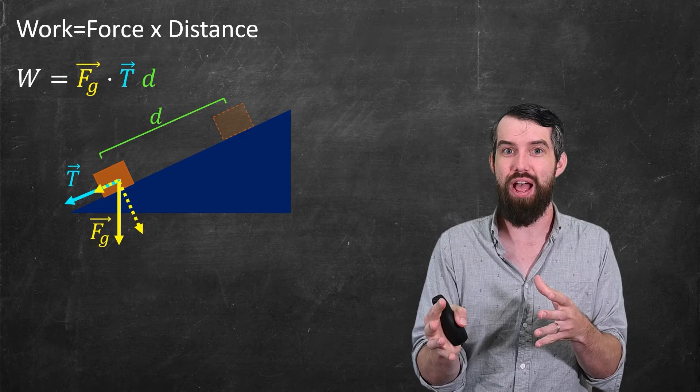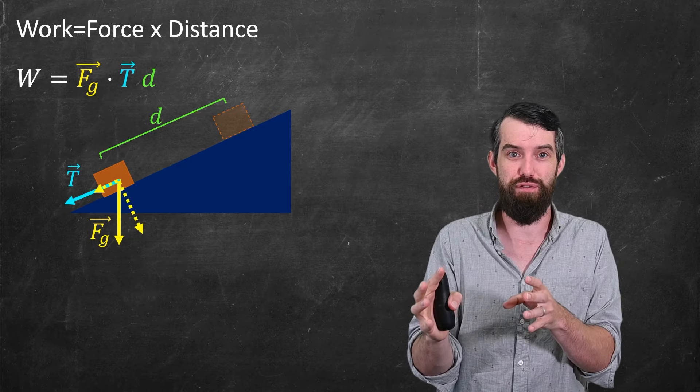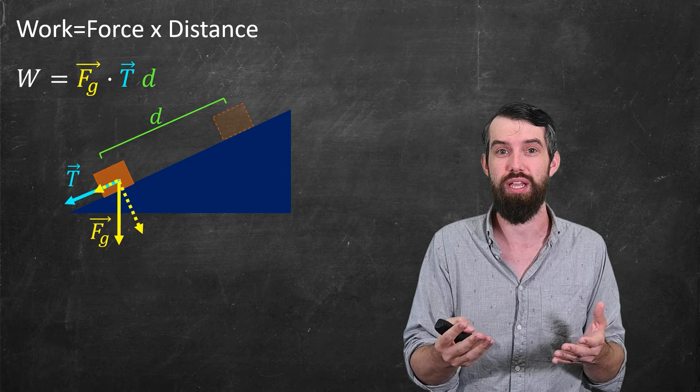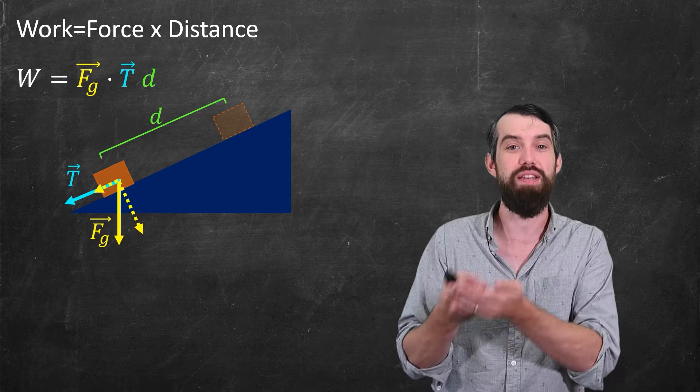It's not the entire force of gravity, just the proportion of the force in the tangential direction, and that's what a dot product captures. And then you multiply that by the distance d.